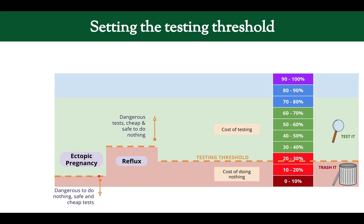Now let's look at a case where we want to push this testing threshold down. The trash-it zone becomes much smaller and the tested zone becomes much bigger. Let's say we're mildly worried that someone might have an ectopic pregnancy — a pregnancy in the tubes or in the wrong place. It's potentially deadly if you miss this, so the cost of doing nothing is pretty dangerous. And the testing is easy — you just do a pregnancy test. If they're not pregnant, they don't have an ectopic pregnancy. So we're growing the testing zone because the test is very cheap and the cost of doing nothing is potentially death.